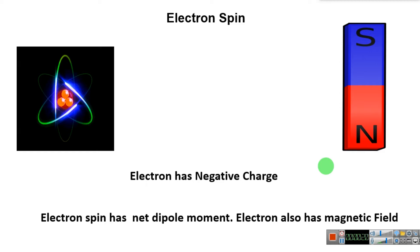But it also has a property called spin. The electron has a magnetic field. We can consider the electron as a bar magnet with a south pole and north pole.